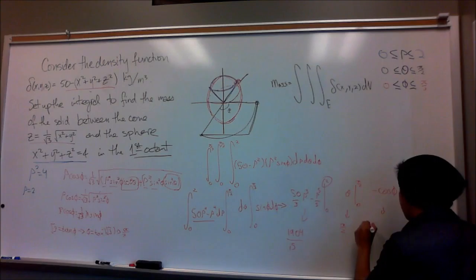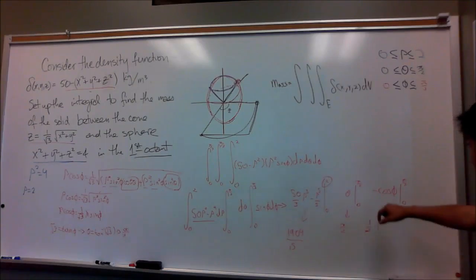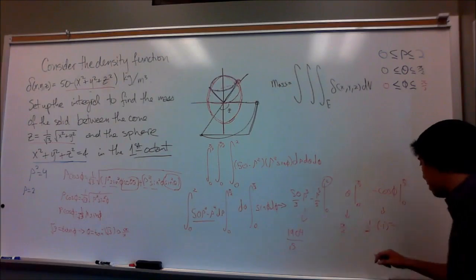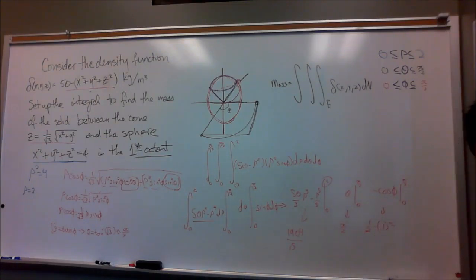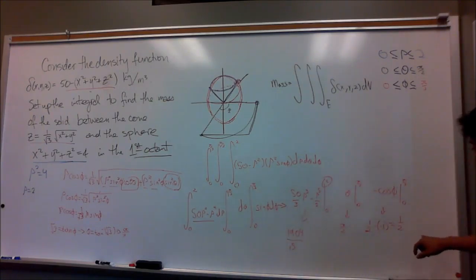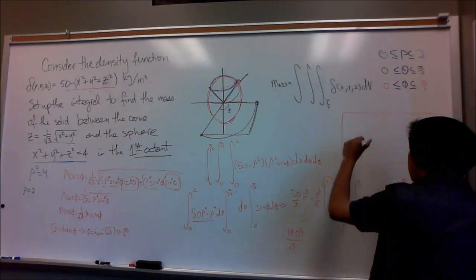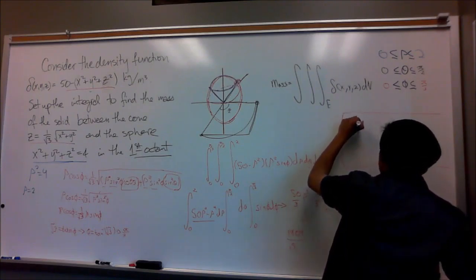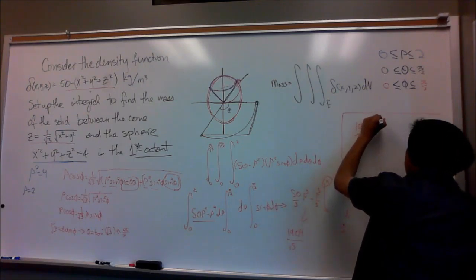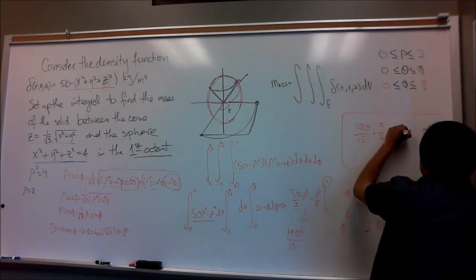So we have negative one half minus negative one, and since the negatives cancel it becomes an addition, giving us one half. Our final answer for the mass is 1904 over 15 times pi over 2 times one half, which equals the total mass of the solid.